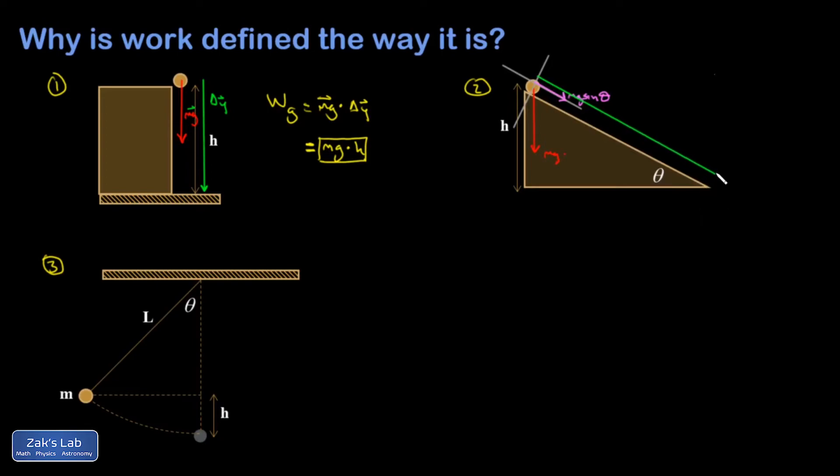There's my displacement. I'm going to say it has a length of L. Okay. Then when I compute the work done by gravity, I get mg sine theta vector dotted into my displacement vector L, and they point in exactly the same direction.